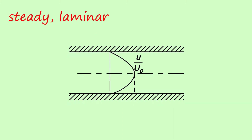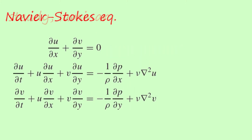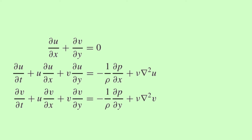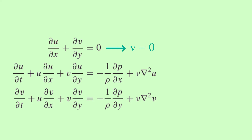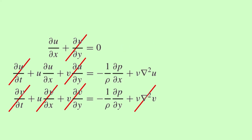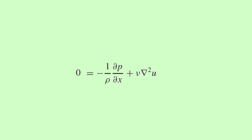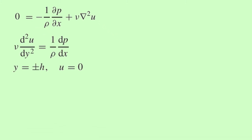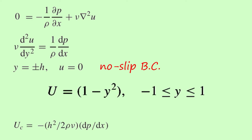First we solve the steady laminar flow and ignore the disturbances. I write the incompressible form of Navier-Stokes equations. Since the flow is fully developed we have no gradient in the X direction, and the continuity equation tells me that the Y component of velocity V has no gradient in the Y direction. So the boundary conditions specify that V equals zero, temporal derivatives are zero, and gradients in the X direction are zero. This leaves us with only the X momentum equation, and if you integrate it twice with respect to Y and apply no-slip boundary conditions you come up with the result for U, non-dimensionalized by centerline velocity, with Y non-dimensionalized by H.